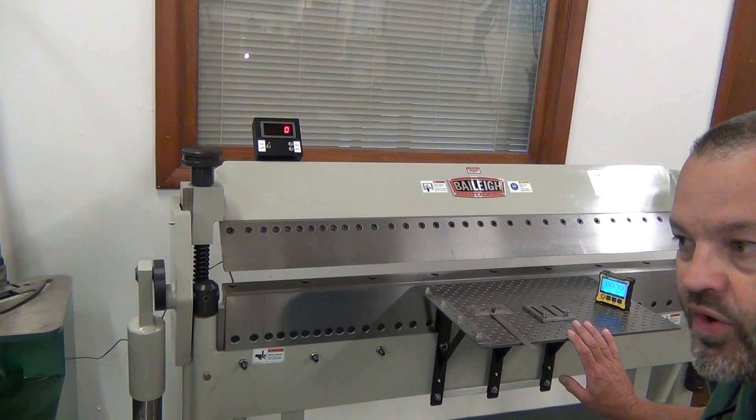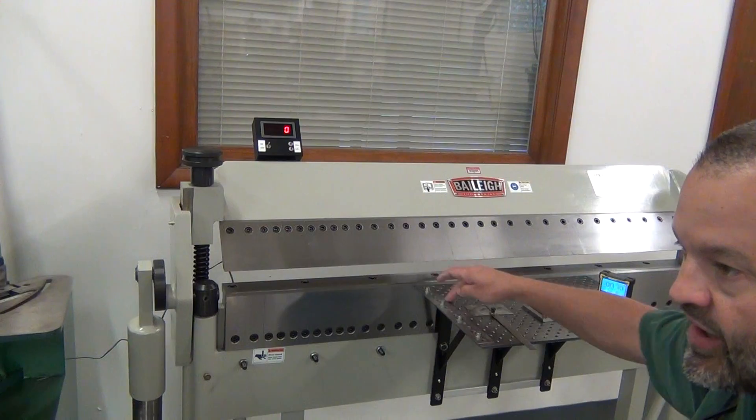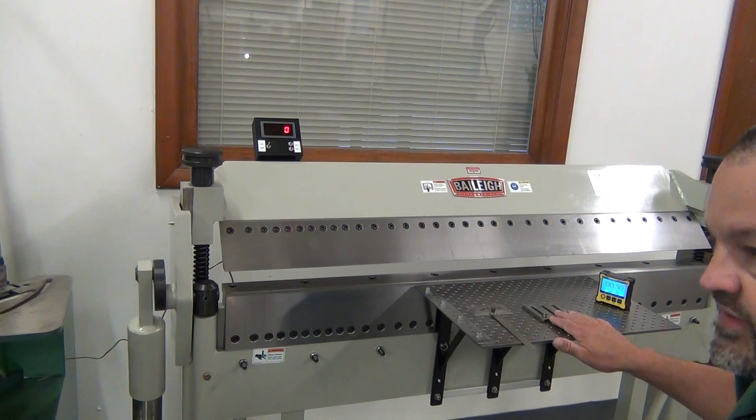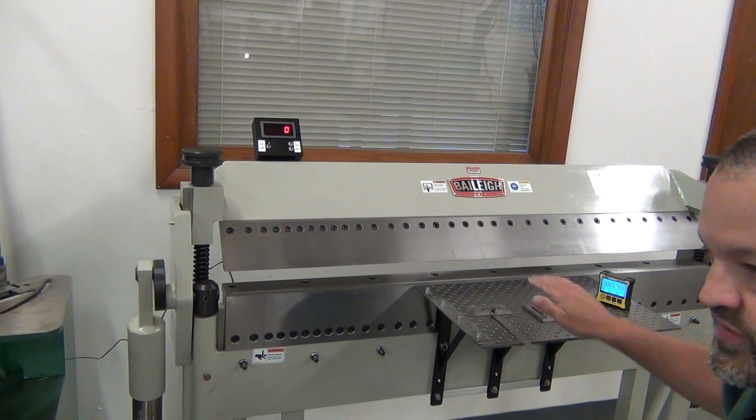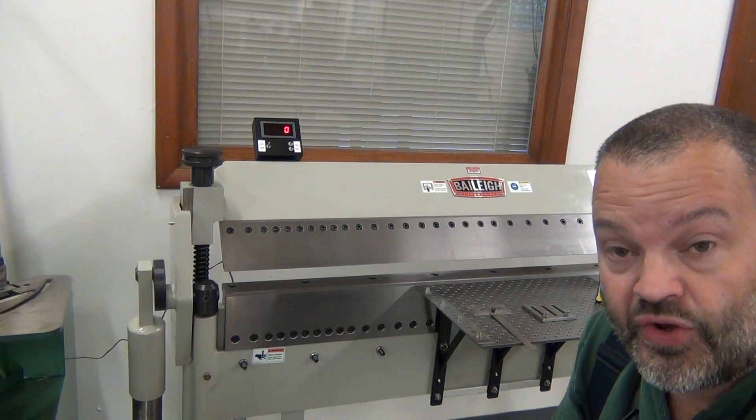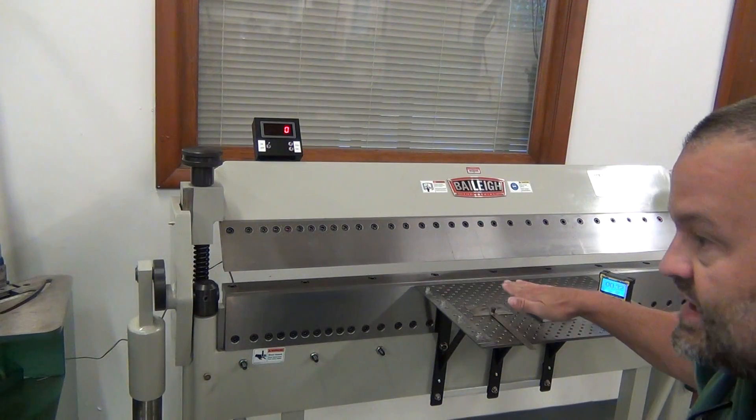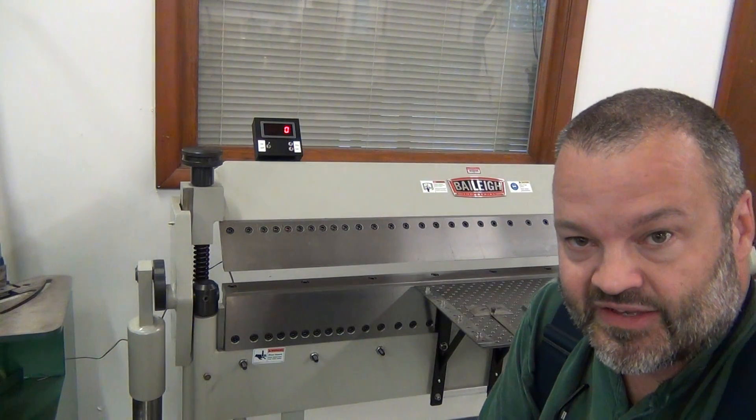You can also have some front gauge points, so if you want to do production sheet metal bends where you control the length of the bend very accurately, you can set a front gauge and then every bend will be exactly the same.